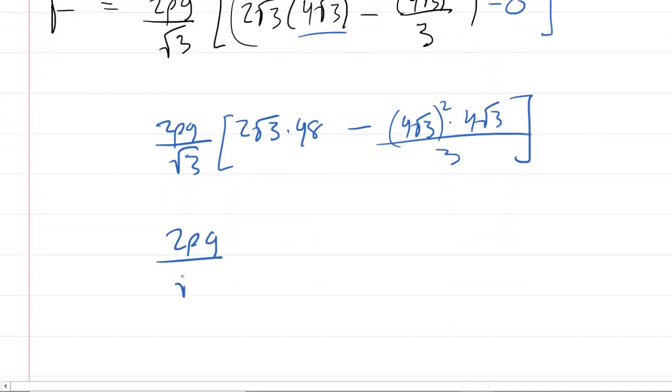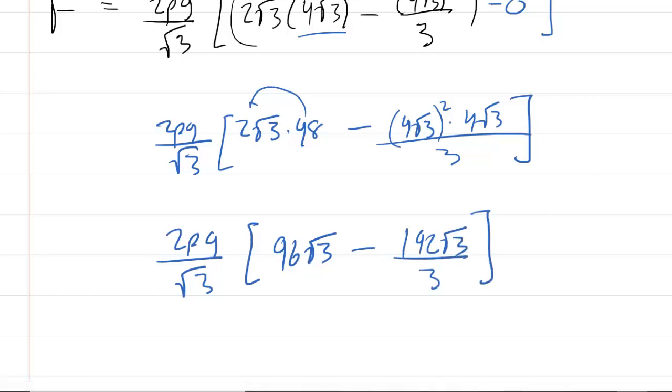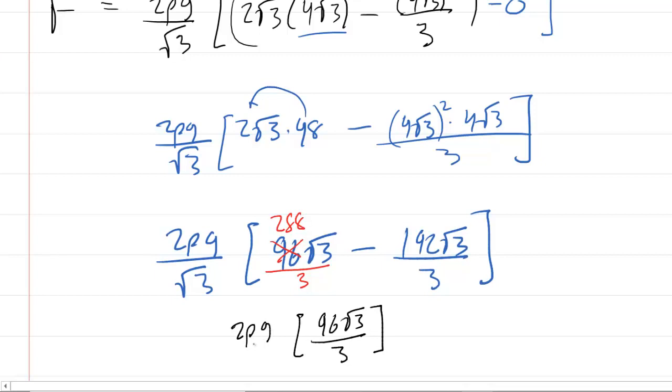Why don't we also do this? 48 times two is 96. So 96 radical three minus, we had 16 times three times four. So that's 192 radical three over three. We'll find a common denominator next. We'll multiply this by three and then multiply upstairs by three. And 96 times three is 288. 288 minus 192 is 96. So inside here, you're going to have 96 radical three over three. Outside, you have two rho g over radical three. It's getting simpler now.